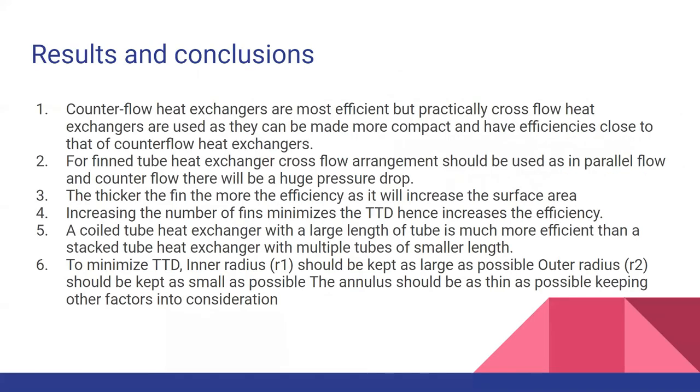Results and conclusion. Counter-flow heat exchangers are more efficient. But practically, cross-flow heat exchangers are used as they are more compact. For fin tube heat exchanger cross-flow arrangement should be used because in parallel flow and counter-flow, there will be a huge pressure drop. The thicker the fin, the more the efficiency as it will increase the surface area. Increasing the number of fins minimizes the TTD. A coiled tube heat exchanger with large length of tube is much more efficient. To minimize TTD, inner radius should be kept as large as possible and outer radius should be kept as small as possible. Hence, the annulus should be as thin as possible.